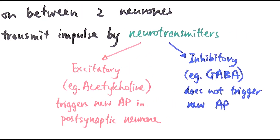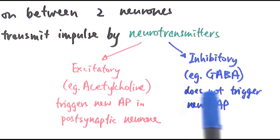An inhibitory neurotransmitter — an example to be aware of is GABA — does not trigger a new action potential. You won't necessarily be asked to name different types of neurotransmitter, but it's helpful to remember these two specific examples of excitatory and inhibitory neurotransmitters.